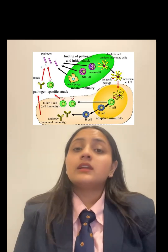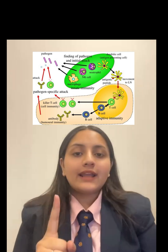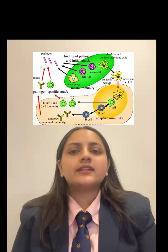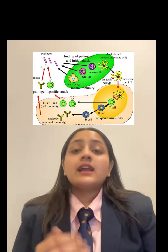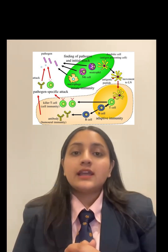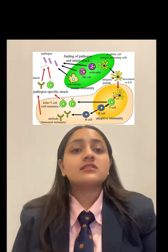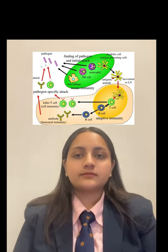This immunological memory forms the basis for long-term protection and vaccination. In conclusion, the innate and adaptive immune systems act as a powerful team — one providing rapid defense and the other offering targeted and long-lasting protection. Understanding their collaboration helps us design better treatments and vaccines for bacterial infections.